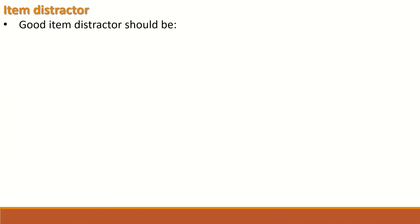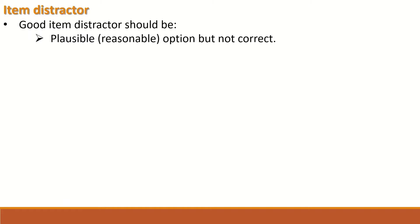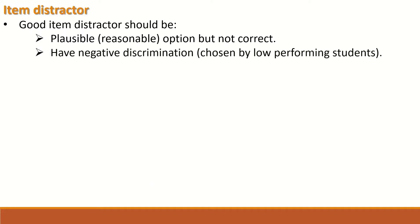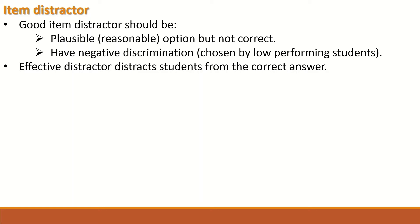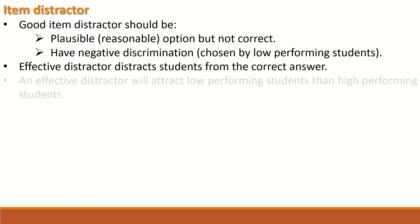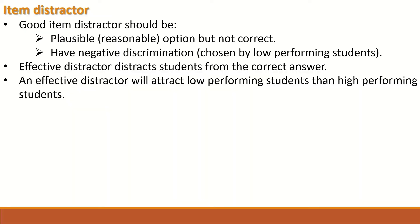A good item distractor should be plausible, i.e., reasonable options but not correct. It should have negative discrimination, i.e., chosen by low performing students. An effective distractor will distract the student from the correct answer and will attract low performing students more than high performing students.